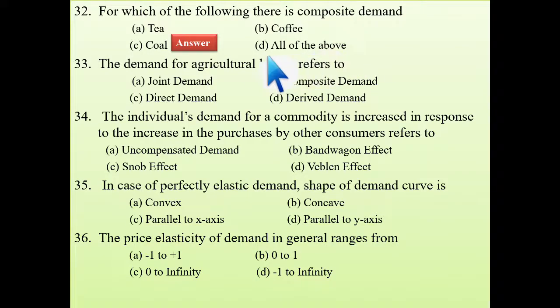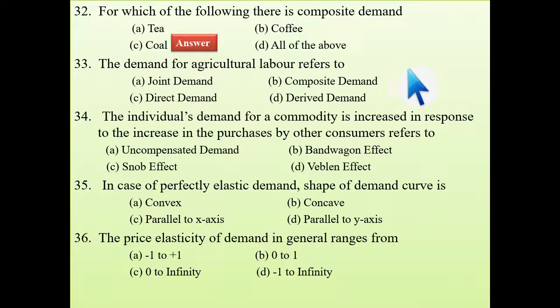Next: the demand for agricultural labor is what type of demand? We demand labor because our goal is to have production. We demand labor so that we can get production, so it is derived demand — not direct demand, but derived or indirect demand.